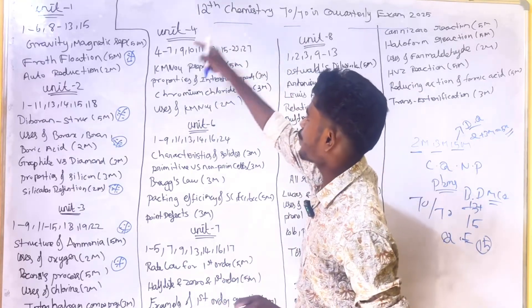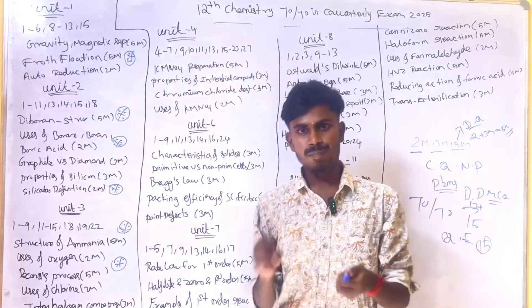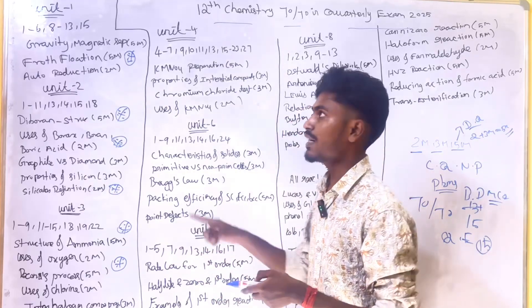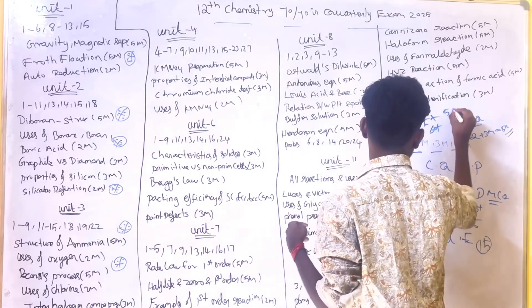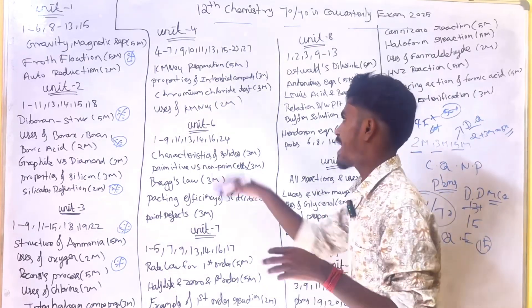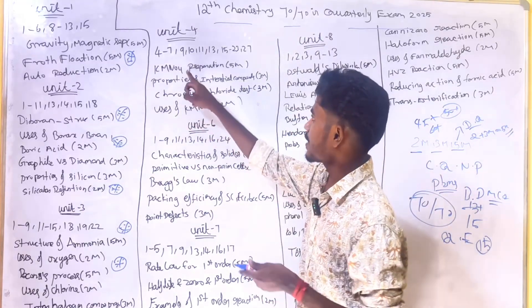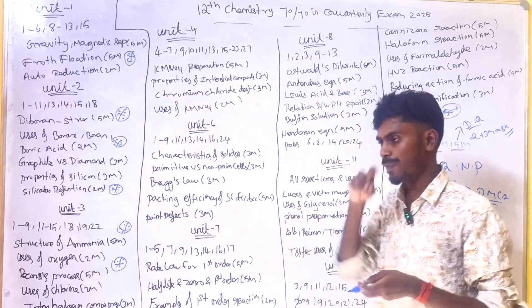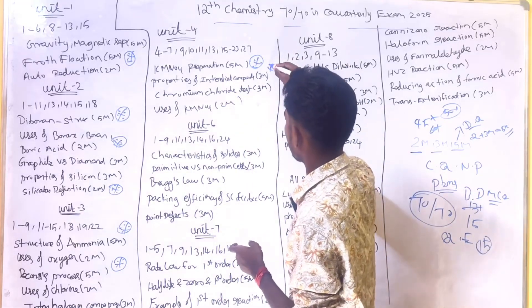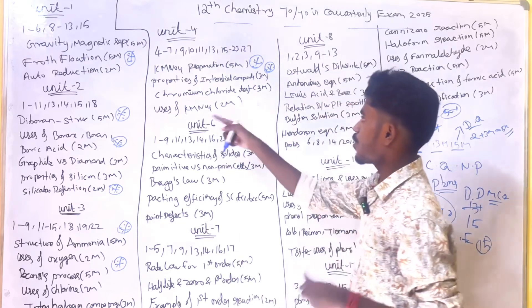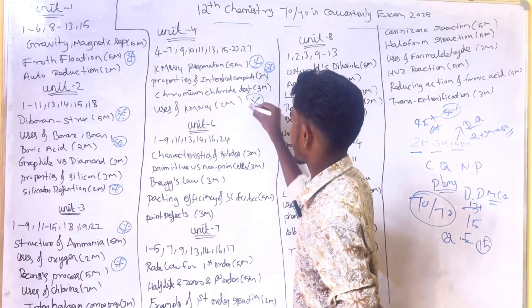Unit 4: Questions 4, 5, 6, 7, 9, 10, 11, 13, and 15 to 23 are important. Preparation of Potassium Dichromate is a very very important question. Properties of Interstitial Compounds is a 3 mark question. Chromium Chloride test is a very important 3 mark question. Uses of Potassium Permanganate is a 2 mark question.